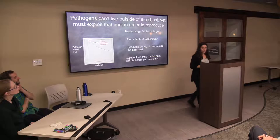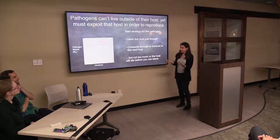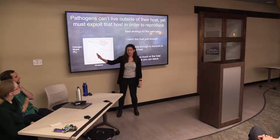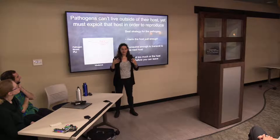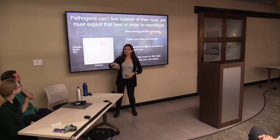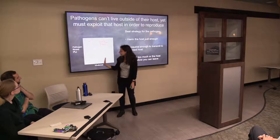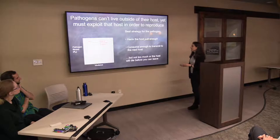Make sure the host doesn't die before you leave. These two factors predict highest fitness for pathogens — often measured as R-naught, which occasionally pops up in doomsday epidemic movies. It's just a measure of evolutionary fitness; higher is better for the pathogen. So we expect a peak somewhere in the middle: not harming too much, not harming too little.